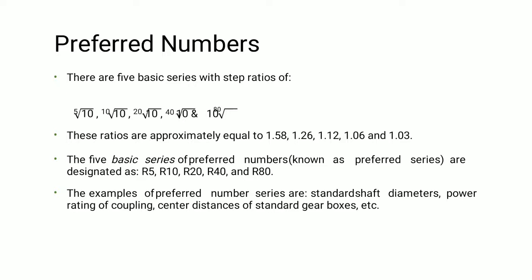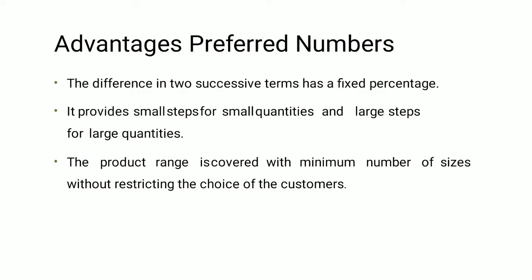Standard examples of preferred number series include standard shaft diameters, power ratings of couplings, and center distances of a standard gearbox. Advantages of preferred numbers: the difference between two successive terms has a fixed percentage. It provides small steps for small quantities and large steps for large quantities, and the product range is covered with a minimum number of sizes without restricting customer choices.